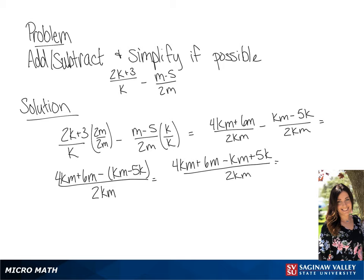Now we're going to combine the like terms in our numerator, and we will get a final answer of 3km plus 6m plus 5k all over 2km. Thank you.